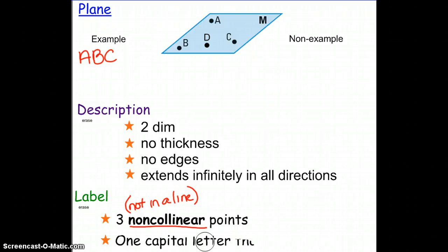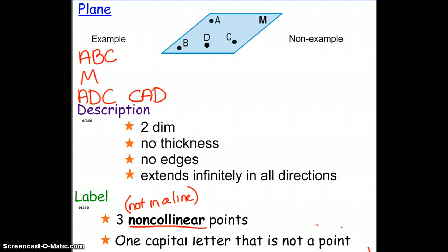Next, we could use one capital letter that's not a point. So if we take notice to the capital M that's in the upper right-hand corner of that plane, that doesn't have a dot next to it. Therefore, that is not a point and we could call that plane M. So you should be able to think to yourself, well, there was a couple ways to name a line. There must be a couple ways to name the same plane. So perhaps you saw this plane as A, D, C instead of A, B, C. And we could reorder those letters and we could say C, A, D. So it doesn't matter the order of the letters as long as there is not one line that contains all three of those points.